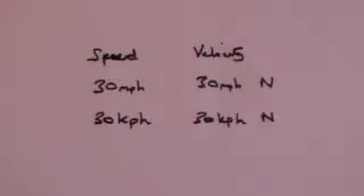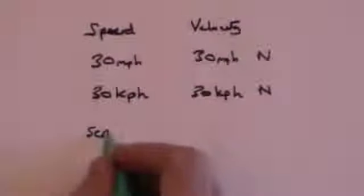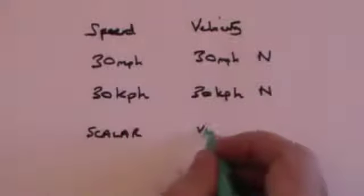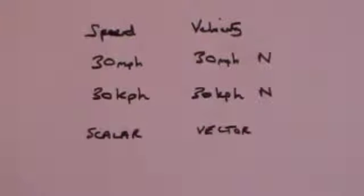So the difference between speed and velocity is that speed is just the value, or what we call the magnitude, whereas velocity has both the magnitude — 30 miles an hour — and the direction — north. That is what distinguishes what are called scalars. So speed is a scalar and velocity is what's called a vector. Scalars simply have magnitude. Vectors have magnitude and direction.